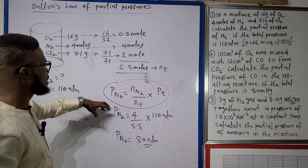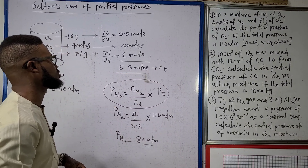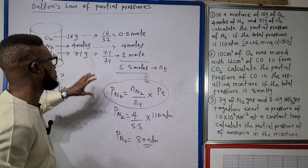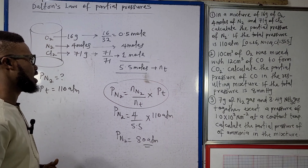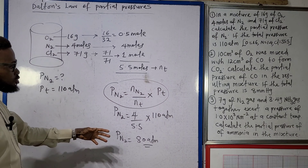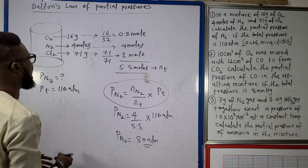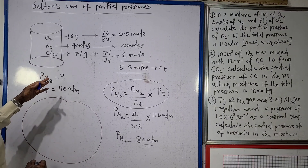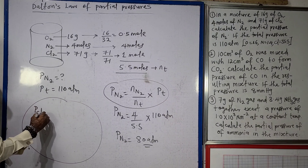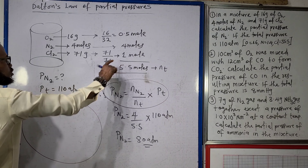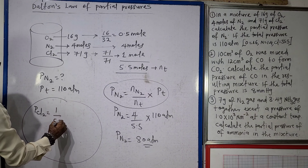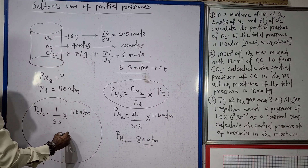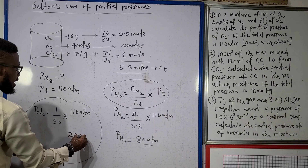The main formula: partial pressure of a gas = (moles of that gas / total moles) × total pressure. For example, if asked for the partial pressure of chlorine: (1 / 5.5) × 110 = 20 atmospheres. That ends question one.